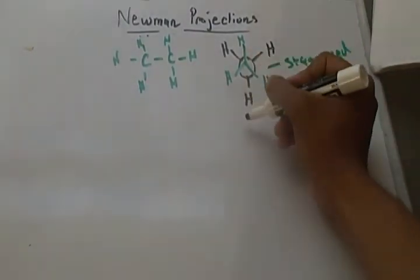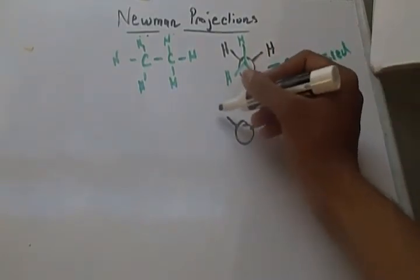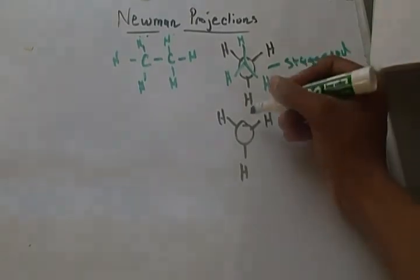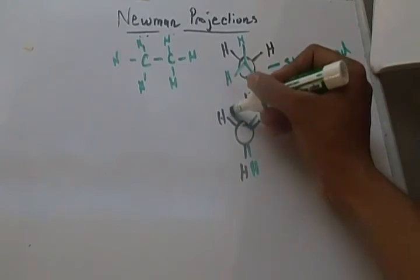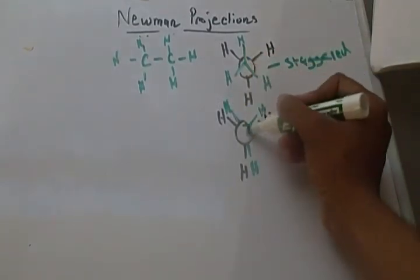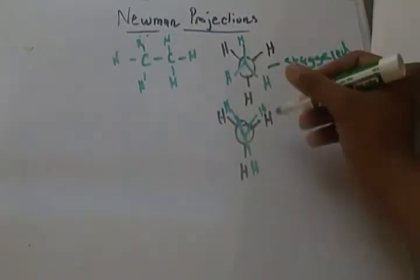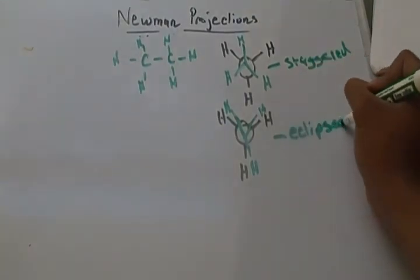So I had my black carbon in the back and I didn't move it, so all my hydrogens are going to stay the same. But I did move my front carbon. I rotated it by 60 degrees. And it turned out like this. My hydrogens from the front are basically covering the hydrogens in the back. That's known as an eclipsed state.